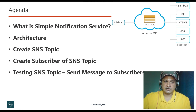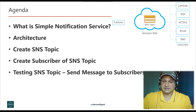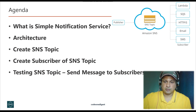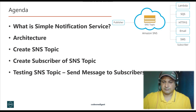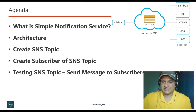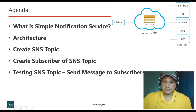Here is the agenda of this tutorial. Today I'll explain what is Simple Notification Service and how it works — we'll understand that with an architecture diagram. Then we'll show you how to set up SNS service: we have to create an SNS topic, then create a subscriber for the topic so they can receive messages, and finally test the SNS topic by sending a message to subscribers. In about 10 minutes you will be able to set up Simple Notification Service in AWS cloud.